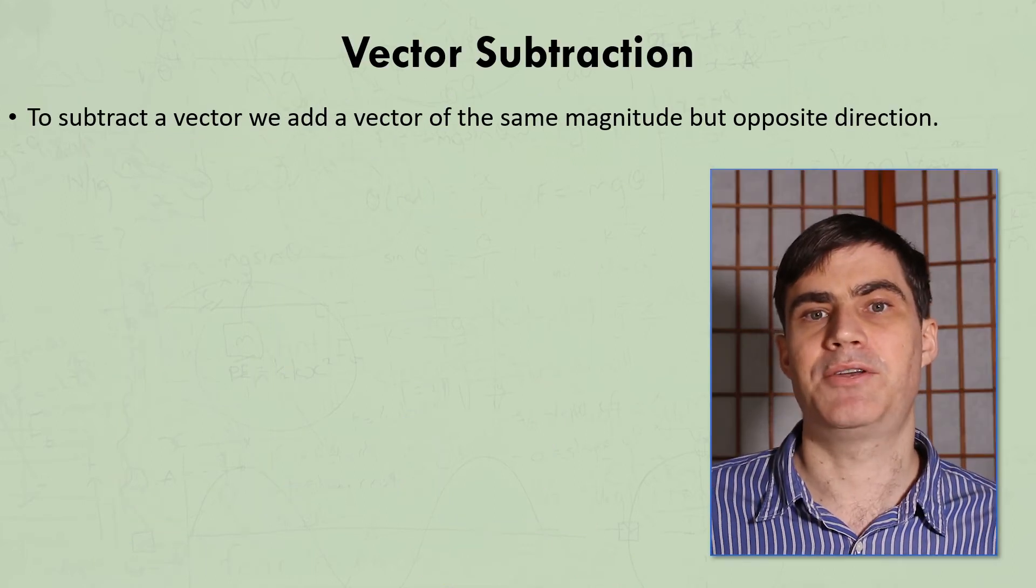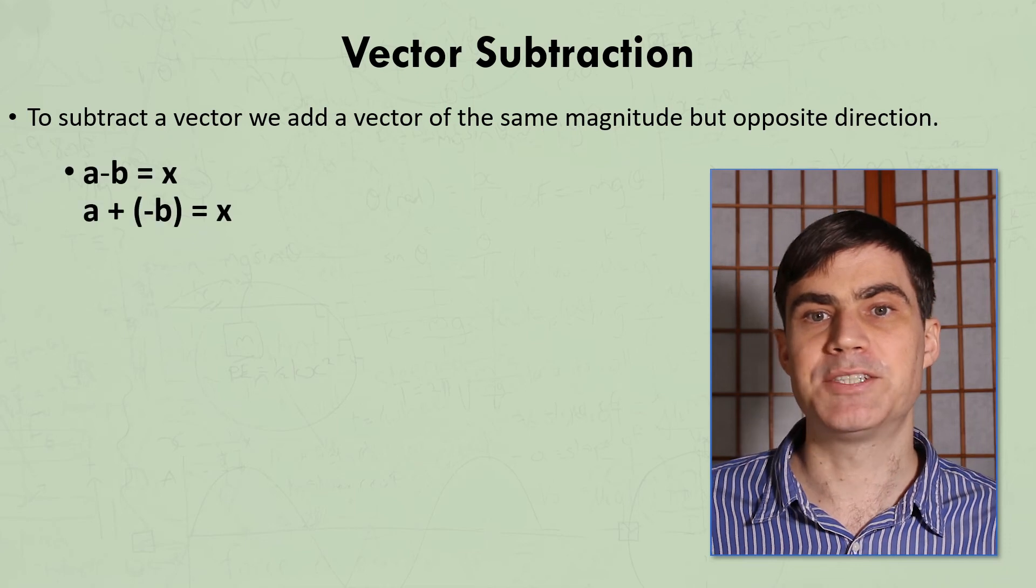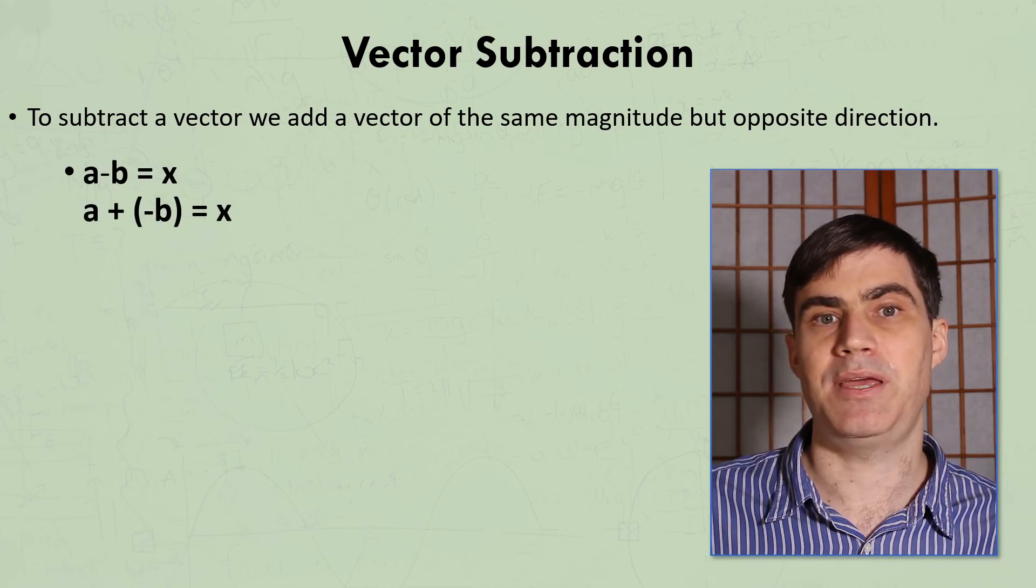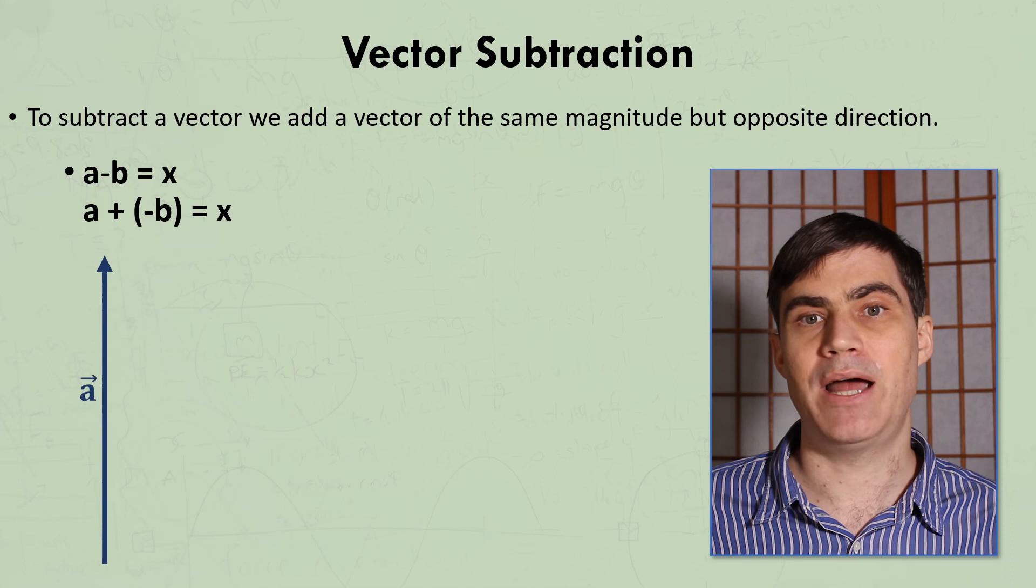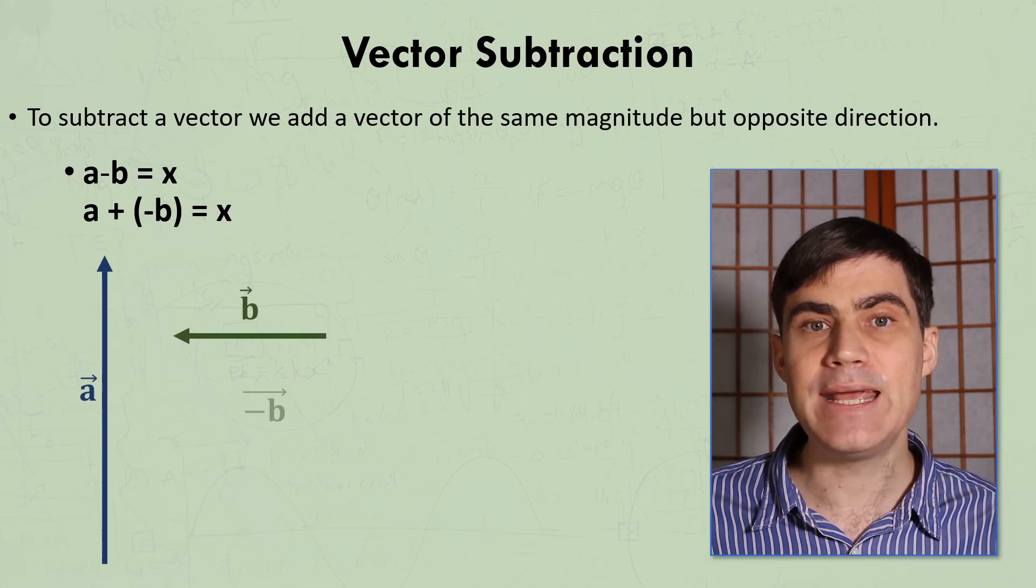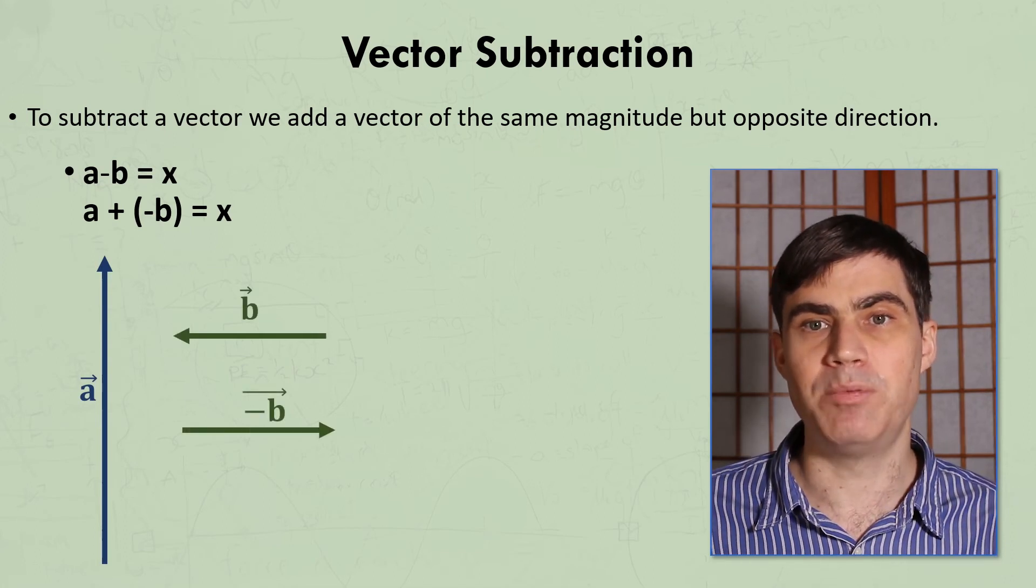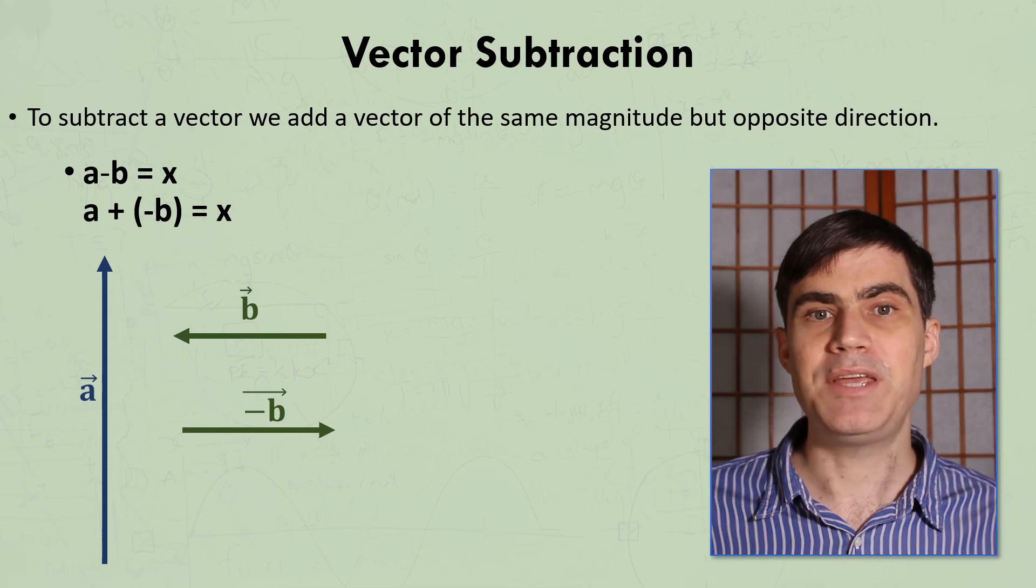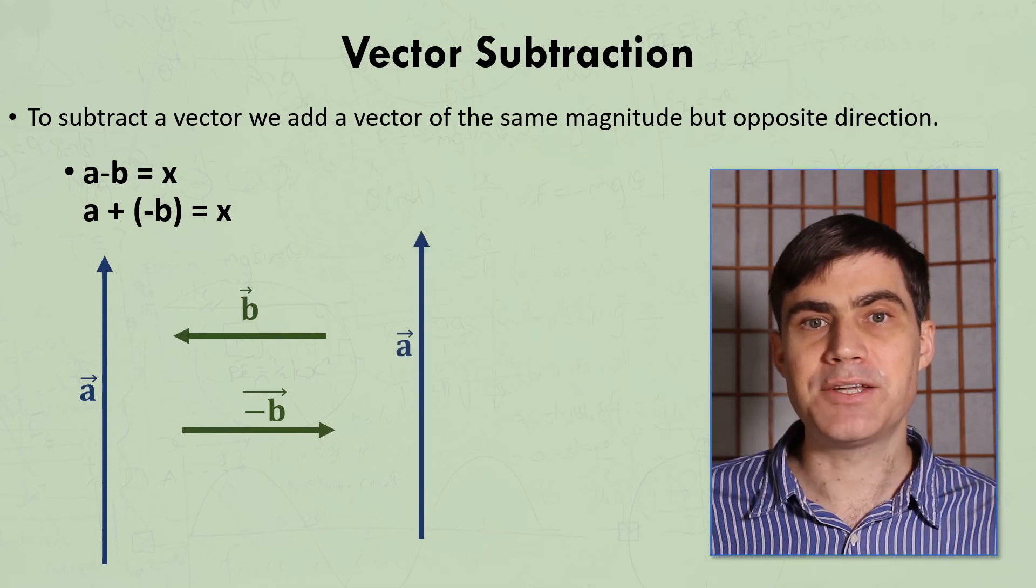If we need to subtract a vector, we apply the law that a minus b equals a plus negative b. So if we want to determine a minus b, then we first find negative b, which is a vector of the same magnitude in the opposite direction. Then we can add a and negative b, so that the resultant is the vector a minus b.